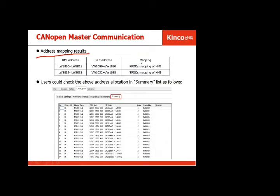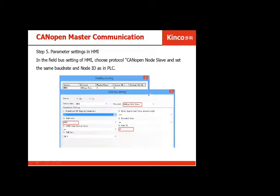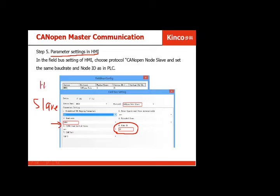The address mapping result shows the HMI address and PLC address from the RPDO and TPDO. You can also check this via the summary view. For the parameter settings on the HMI side, you need to set the same baud rate as the PLC, and also set the node ID — since the HMI is configured as a slave, the master can read or write to it using these settings.